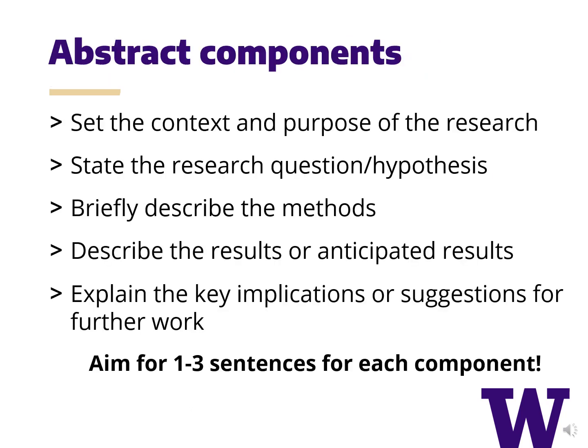Now that we know what an abstract is, we should talk about the components of an abstract. First, you want to set the context and the purpose of the research — this is a great place to demonstrate why your research is important and necessary. Second, you want to state the research question or hypothesis. Then briefly describe the methods. Next, describe the results or the anticipated results. Finally, explain the key implications or suggestions for future work. Each of these components should be about one to three sentences long, and remember that the word count for the UW symposium is 300 words.